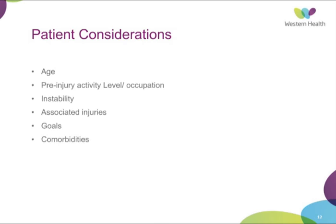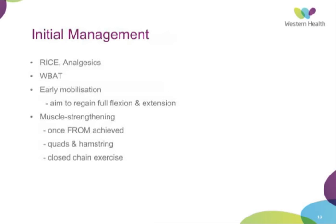Patient considerations are obviously very important. The main ones are the age of the patient, what their pre-injury activity level and occupation were, and therefore what their goals are in terms of getting back to activity levels post-injury. Instability is a big one to consider, as are associated injuries such as meniscal tears or MCL, comorbidities and fitness for surgery, and compliance with post-operative rehab. Regardless of pathway, the initial management is basic first aid — rest, ice, elevation, analgesia. Weight-bearing straight away is recommended to restore full range of motion, particularly extension, as this has been shown to be predictive of post-operative outcomes.